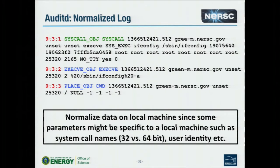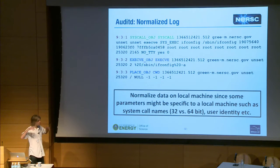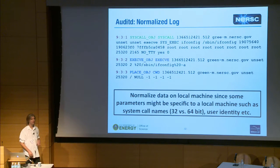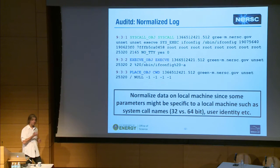I decided not to impose any state-building on the local host — you're already worried about causing problems, and once you build state you start losing information. That all happens back on the analysis side. What you do on the host is normalize against the local machine — turn syscall numbers into names, so 'open' is 'open' no matter what. Also normalize user identity: UID 42 on one box might not be UID 42 on another, so rather than keeping 42, you keep the converted user ID.